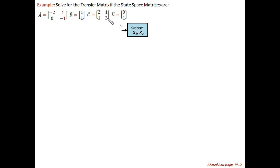Matrix C, given as 2, 1, 1, and 2, is also a 2x2 matrix. Matrix C relates the outputs to the states of the system, so we clearly have two outputs: Y1 and Y2. The D matrix is a 2x1 matrix that relates the outputs of the system to the input. We were able to obtain all this information from the size of those matrices.